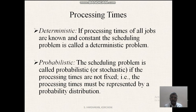Processing times: deterministic — if processing times of all jobs are known and constant, the scheduling problem is called a deterministic problem. Next, probabilistic — the scheduling problem is called probabilistic or stochastic if the processing times are not fixed, that is, the processing times must be represented by a probability distribution.